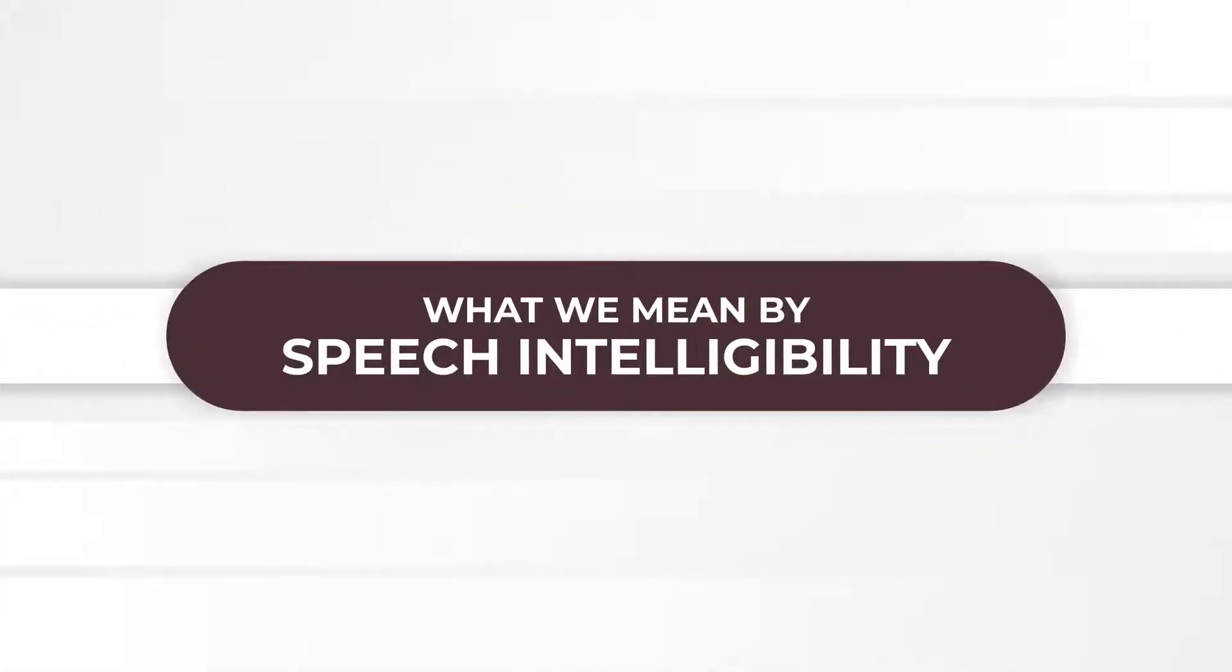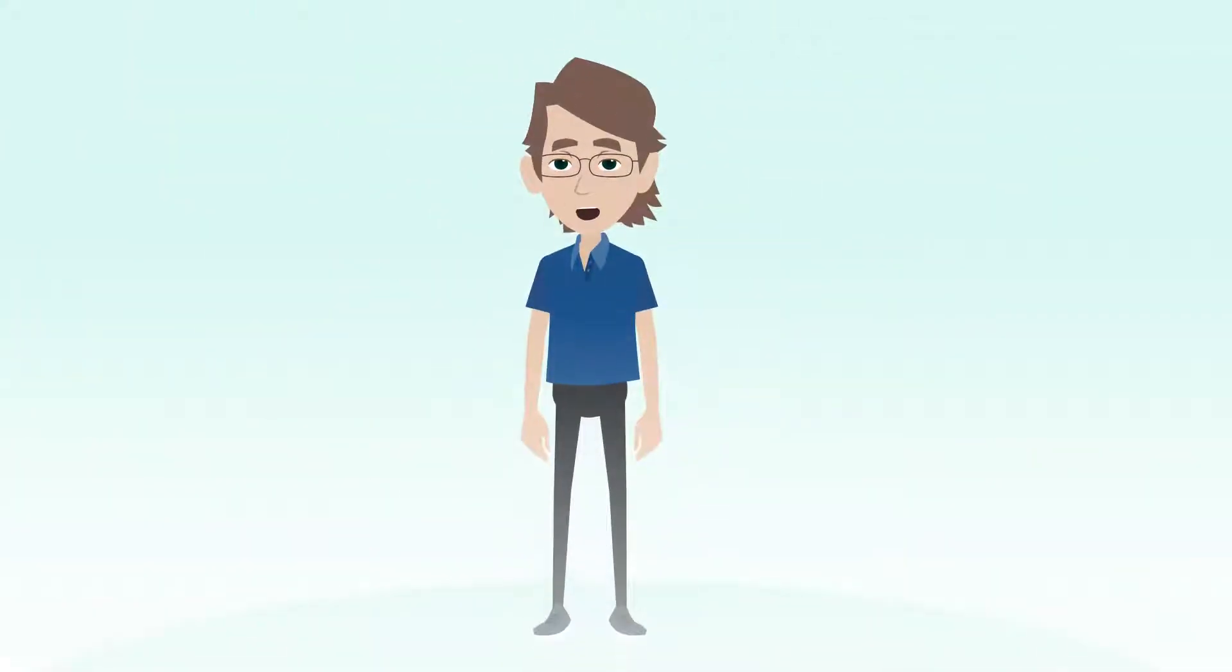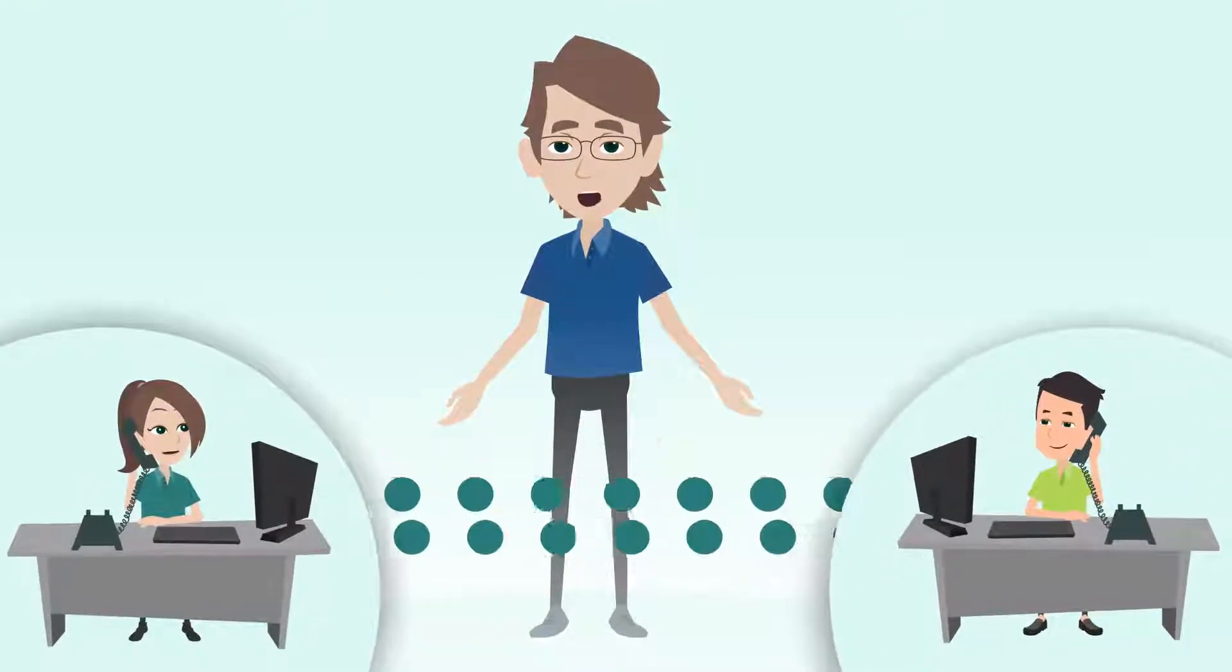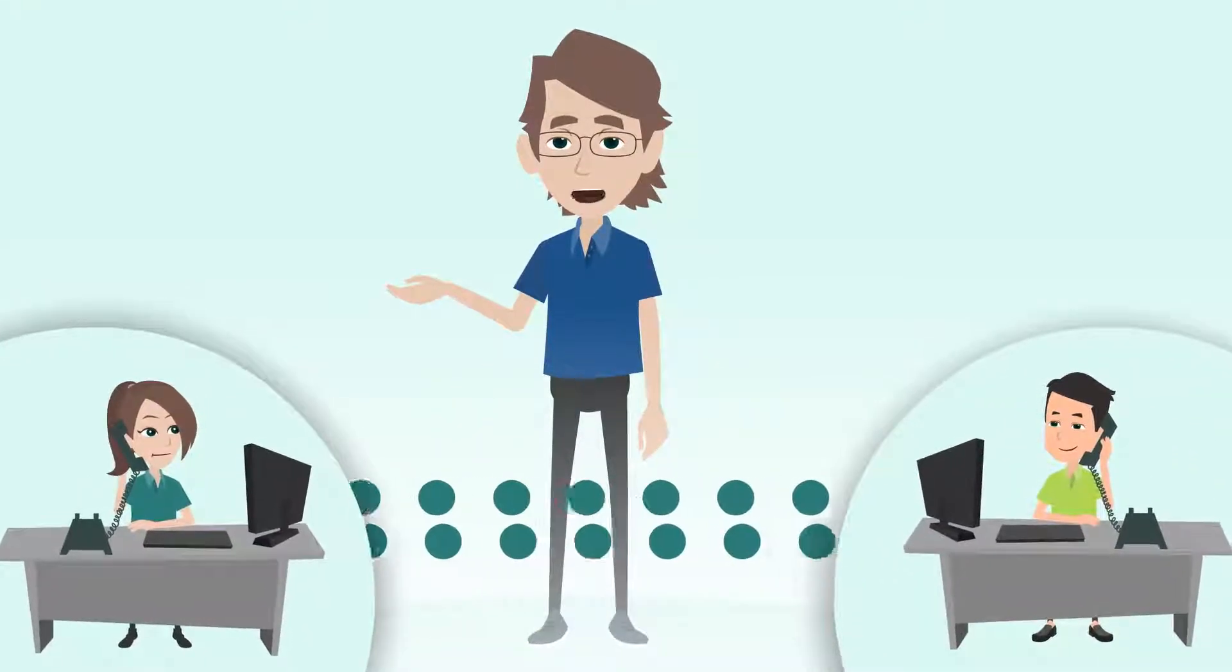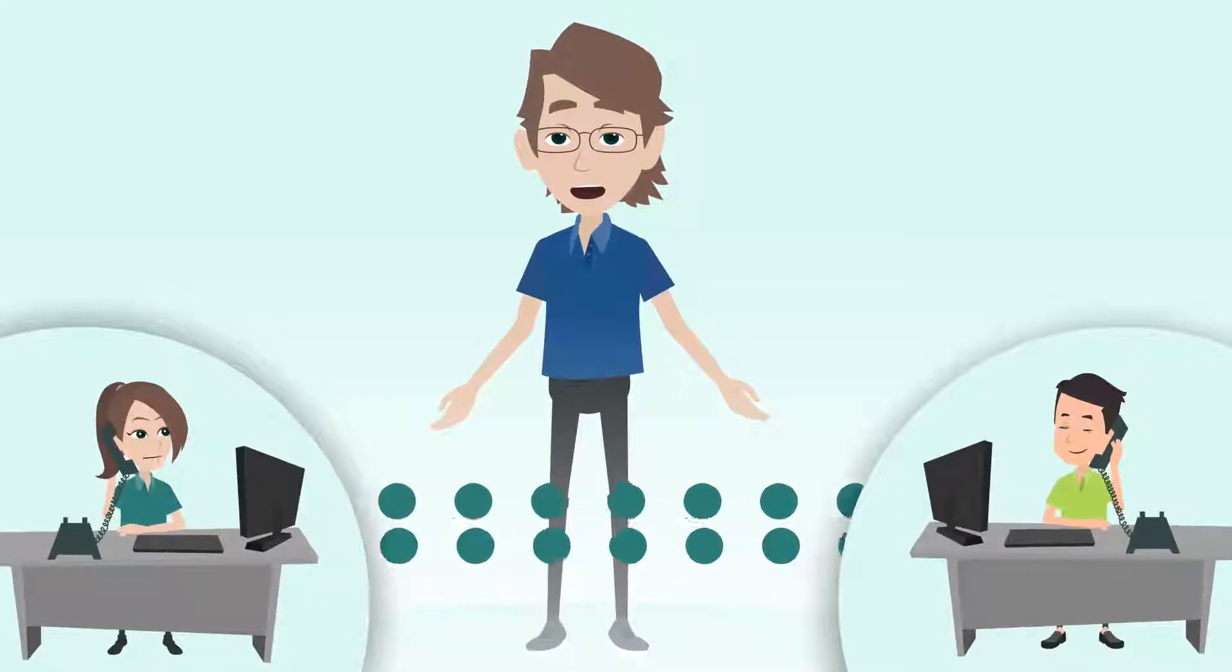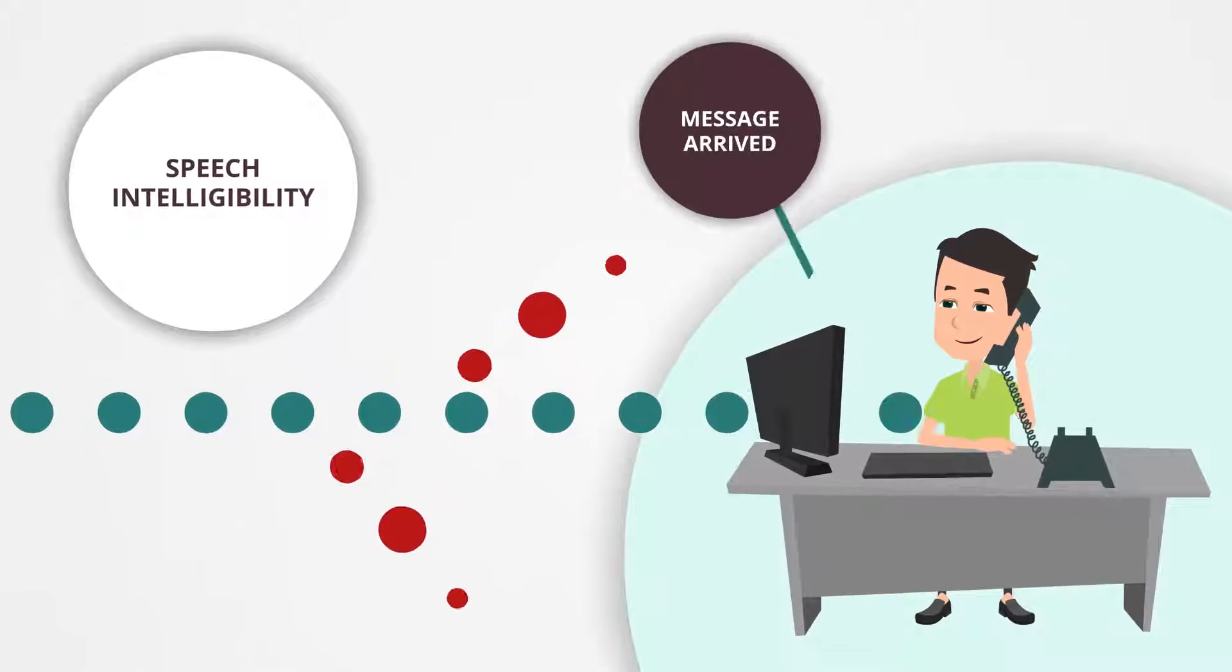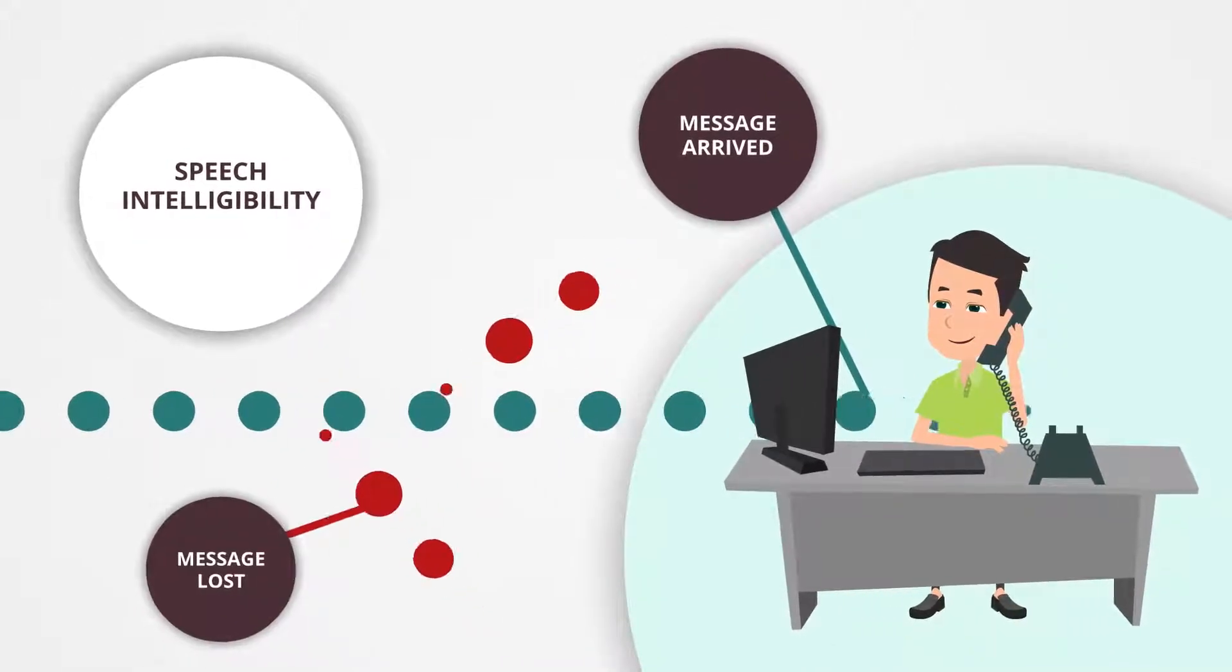First of all, let's clarify what we mean by speech intelligibility. Assume we have a talker on one end of a channel, say a phone line. On the other end of the line is a listener. As the talker is speaking, the listener tries to hear every word. Speech intelligibility is simply a measure of how much of the talker's message arrives at the listener and how much is lost.